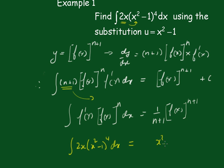(x² - 1)⁵ and this will be 1/5 plus a constant.